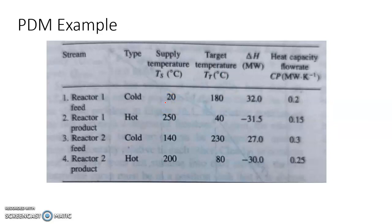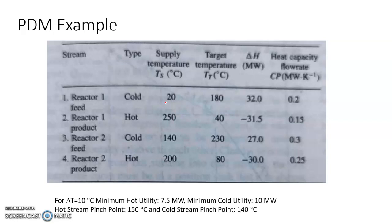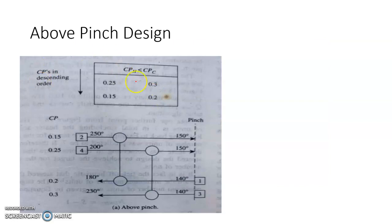Let us look at a four-stream example with two cold and two hot streams. Delta H and heat capacity flow rates are given. We first perform the problem table analysis, which gives us minimum hot utility, minimum cold utility, and the pinch temperature. With delta T minimum of 10, the minimum hot utility is 7.5 MW, cold utility is 10 MW, and the pinch point is 150°C for hot streams and 140°C for cold streams.